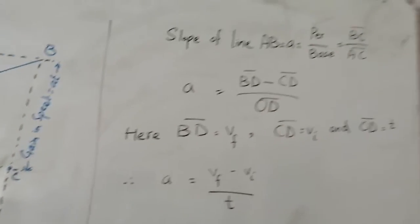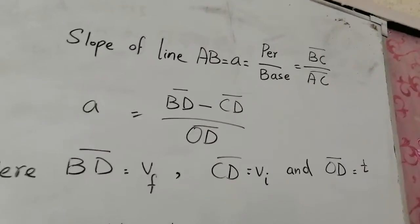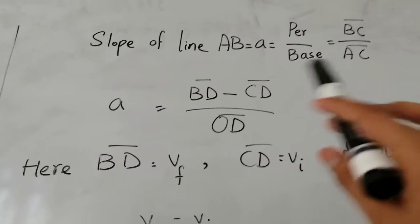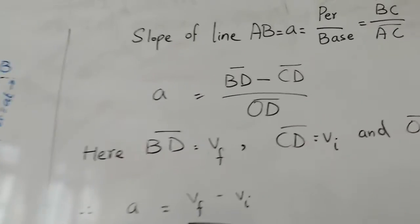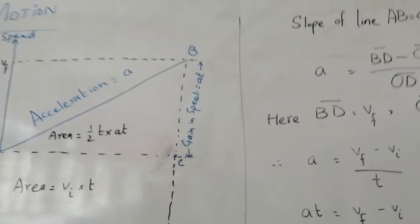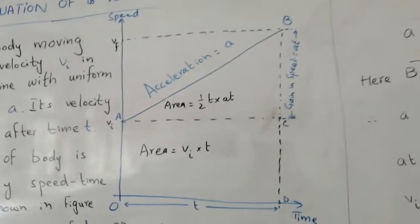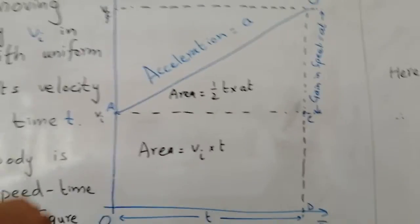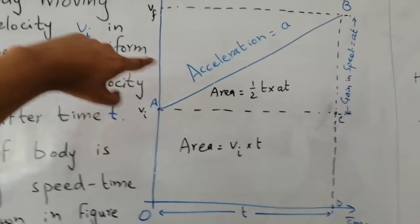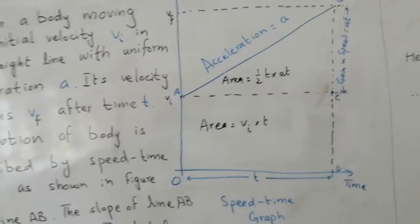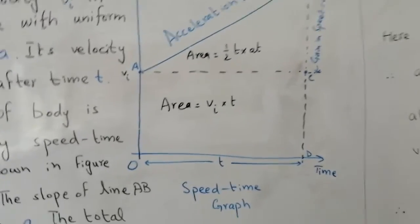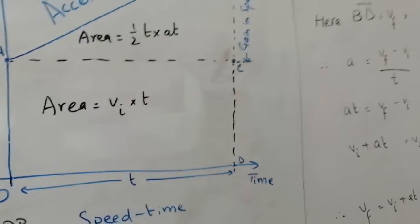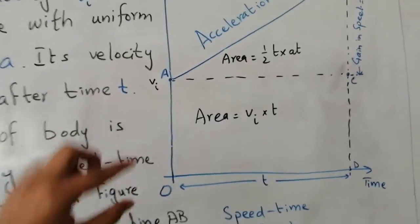Here we have written BC as BD minus CD, and OD as t. If we see in the graph, BD is the total velocity, which is vf. So BD value is vf.